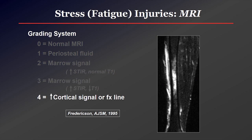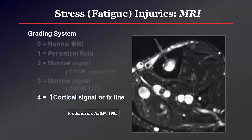Grade 4 involves any kind of signal in the cortex or a discrete fracture line. This was a 50-year-old cross-country coach who came in complaining of what felt like shin splints. He has very extensive marrow edema in his mid-tibial shaft, and on the axial scans we could see this longitudinally oriented vertical stress fracture in the anterior tibial cortex. In practice, if I see grade 1 or 2 changes I'll call it a mild stress reaction; grade 3 is moderate or severe; and if I see cortical signal or a fracture line I'll just call it a stress fracture.